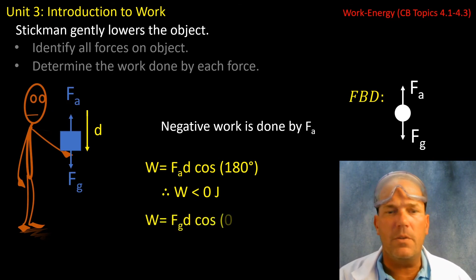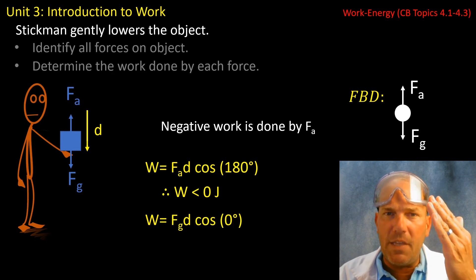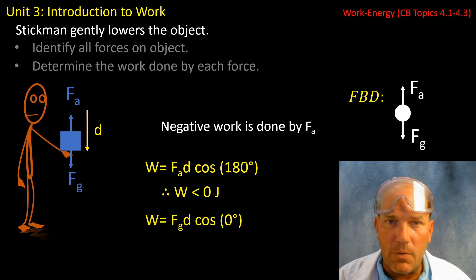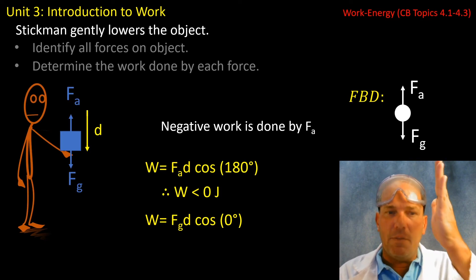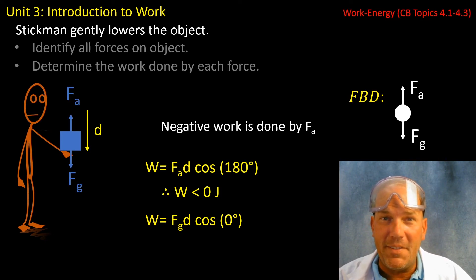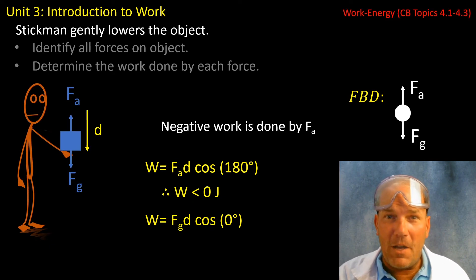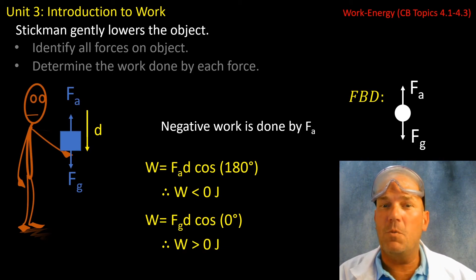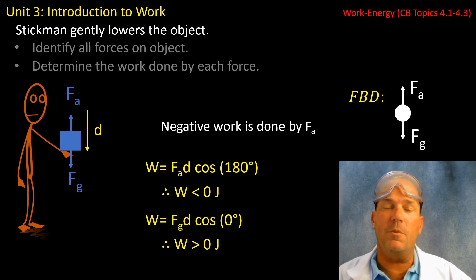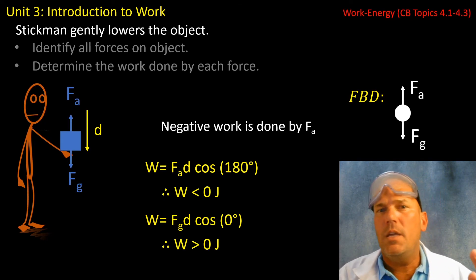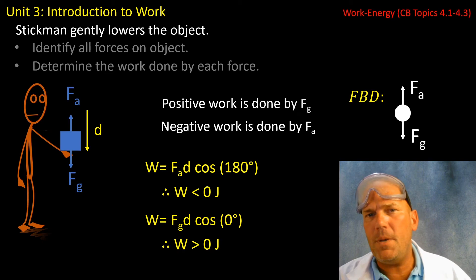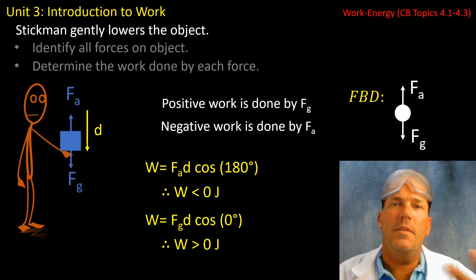If we now consider the force of gravity, the force of gravity is acting straight down toward earth and the displacement of this object was also straight down toward earth. The force is parallel to the displacement, and our angle is zero degrees, which means cosine of zero gives us one, which means work is greater than zero joules — positive work is being done by the force of gravity.